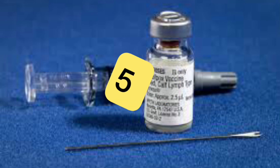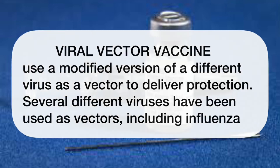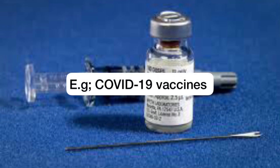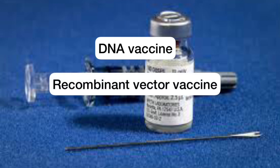We also have the viral vector vaccine, which uses a modified version of a different virus as a vector to deliver protection. Several different viruses have been used as vectors, including the influenza virus. An example of a viral vector vaccine are some COVID-19 vaccines. Other types of vaccines still under study are the DNA vaccine and the recombinant vector vaccine.